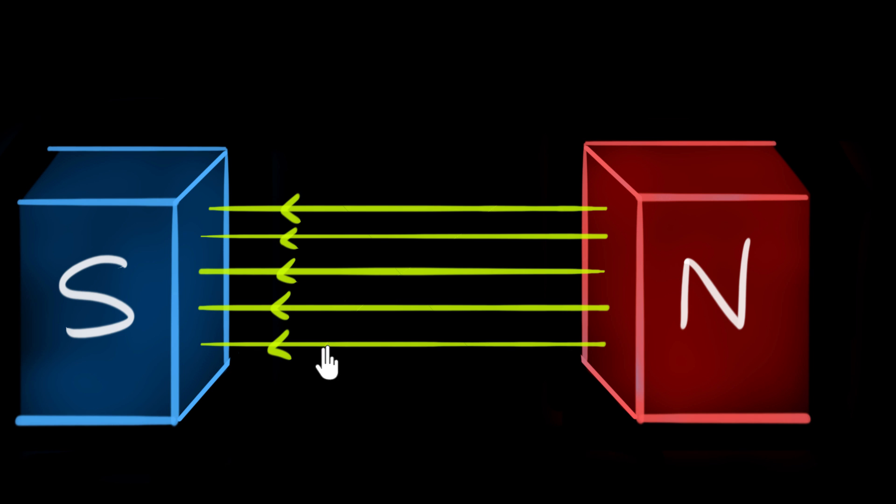To induce a current we need a coil, but instead of a coil we can just move a wire. So let's introduce a wire here and we can move this wire up and down like this.